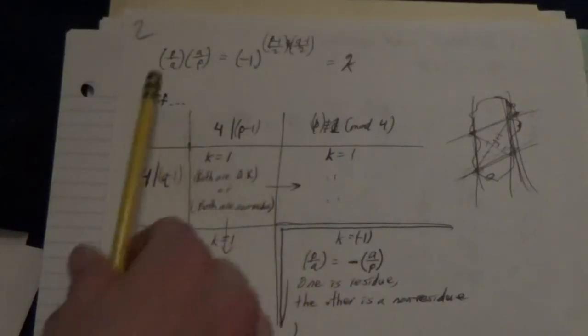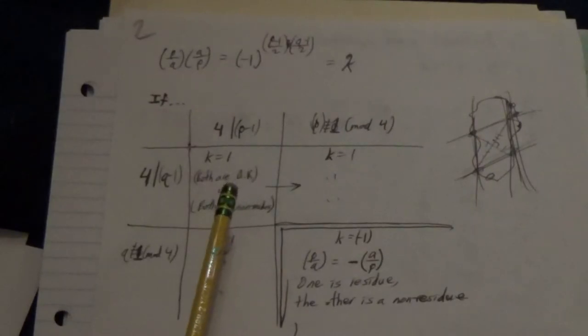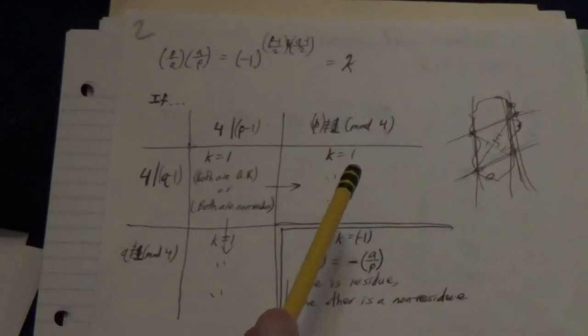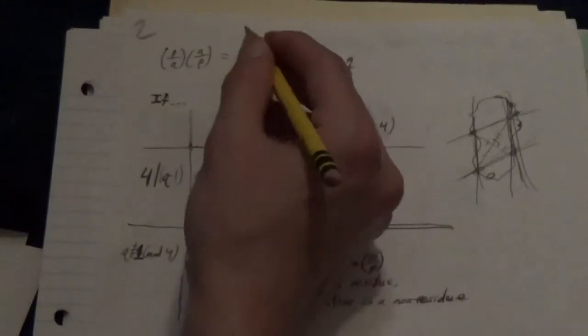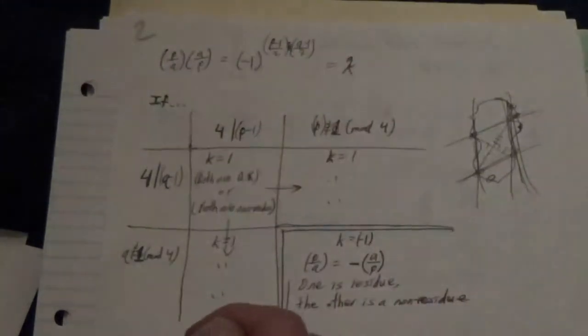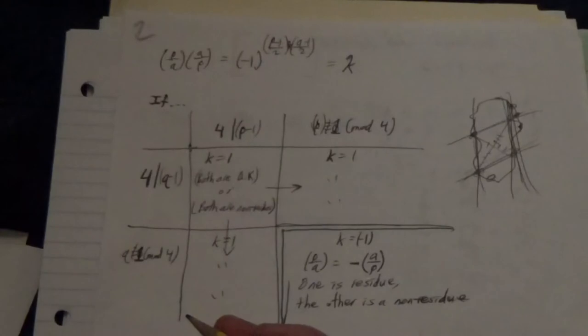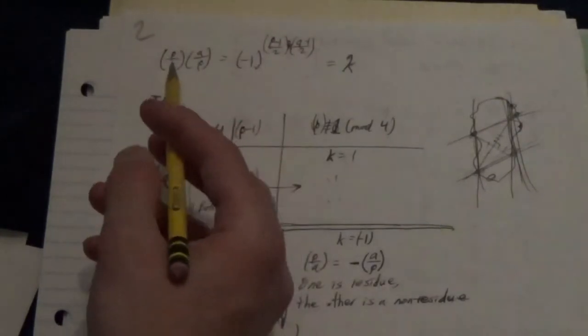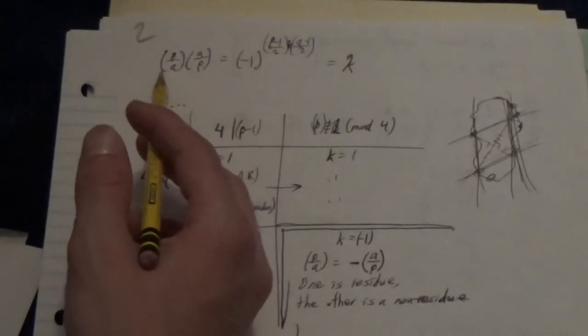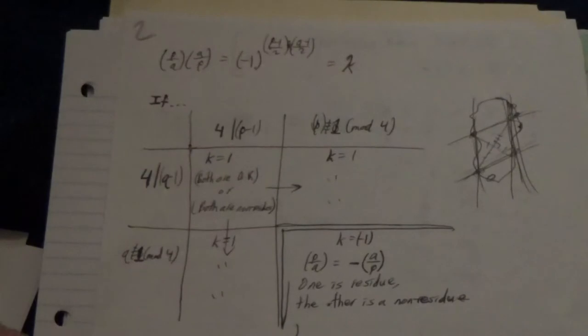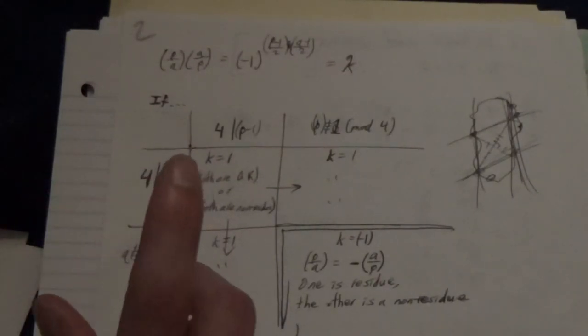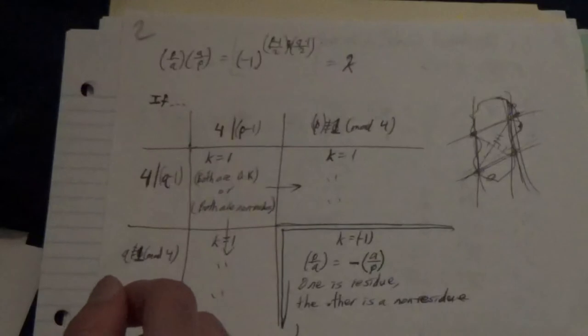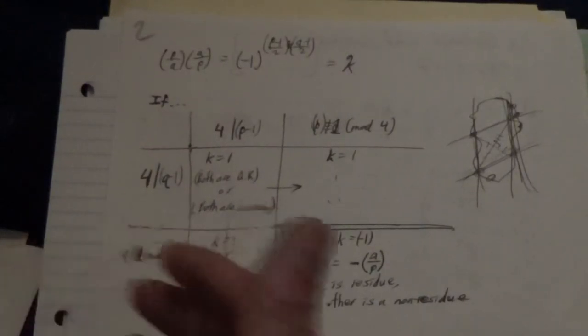So basically what we've logically deduced is that as long as one of the two odd primes, p or q, is congruent to 1 modulo 4, then this whole side of the equation will equal 1. So k will equal 1, which means that p on q and q on p will be equal.